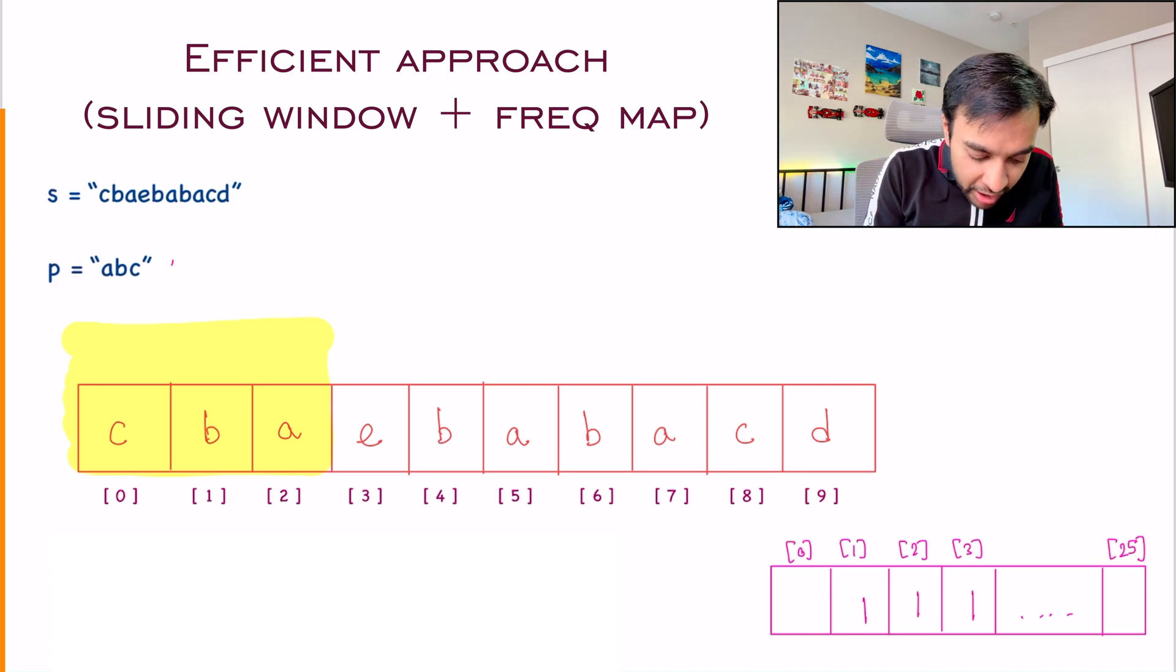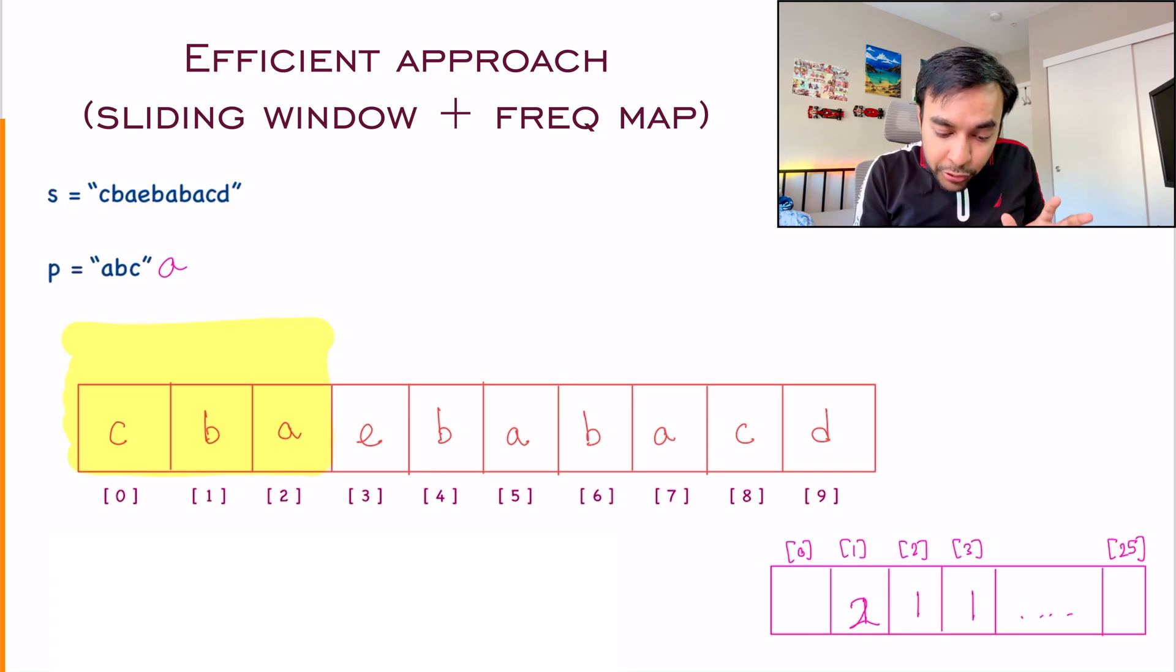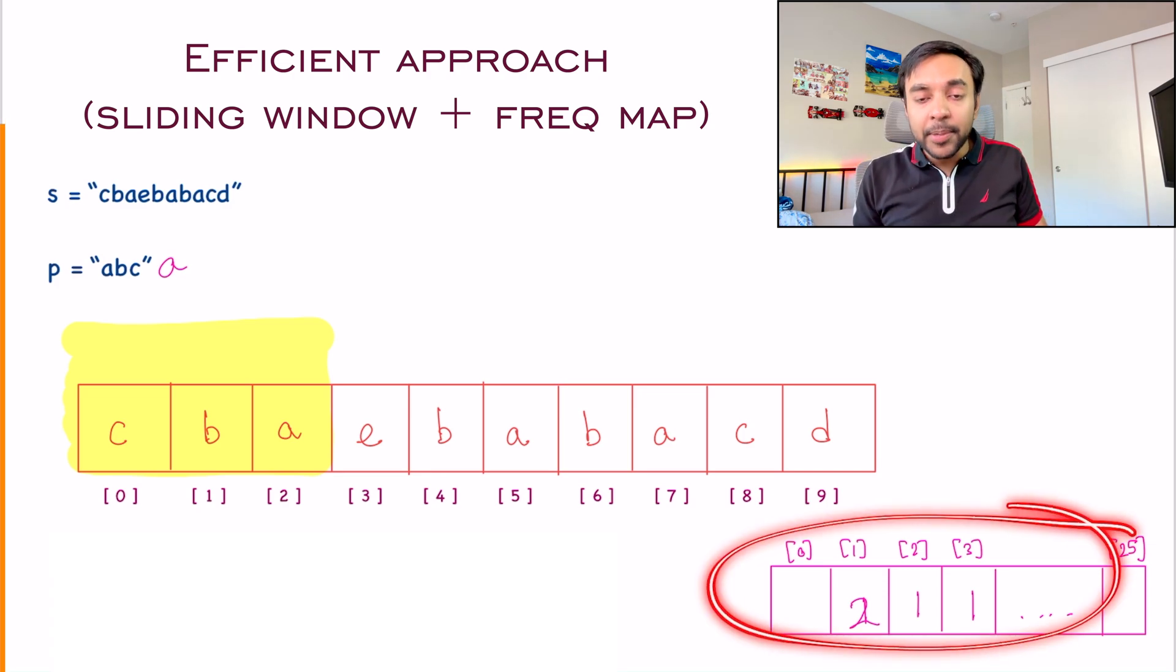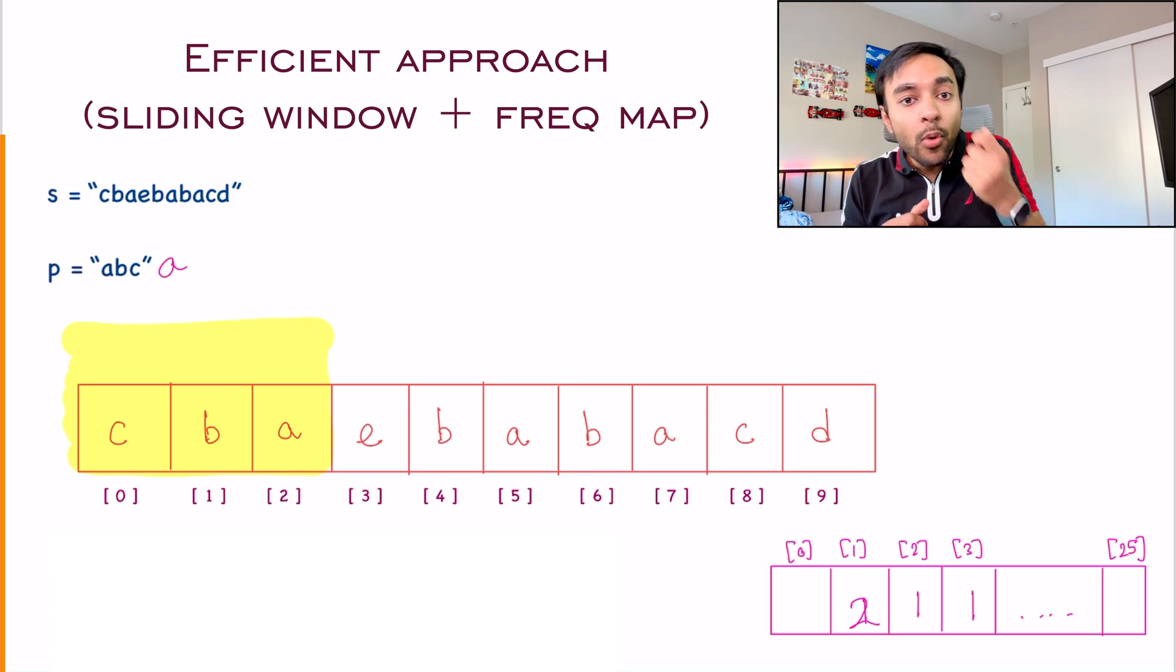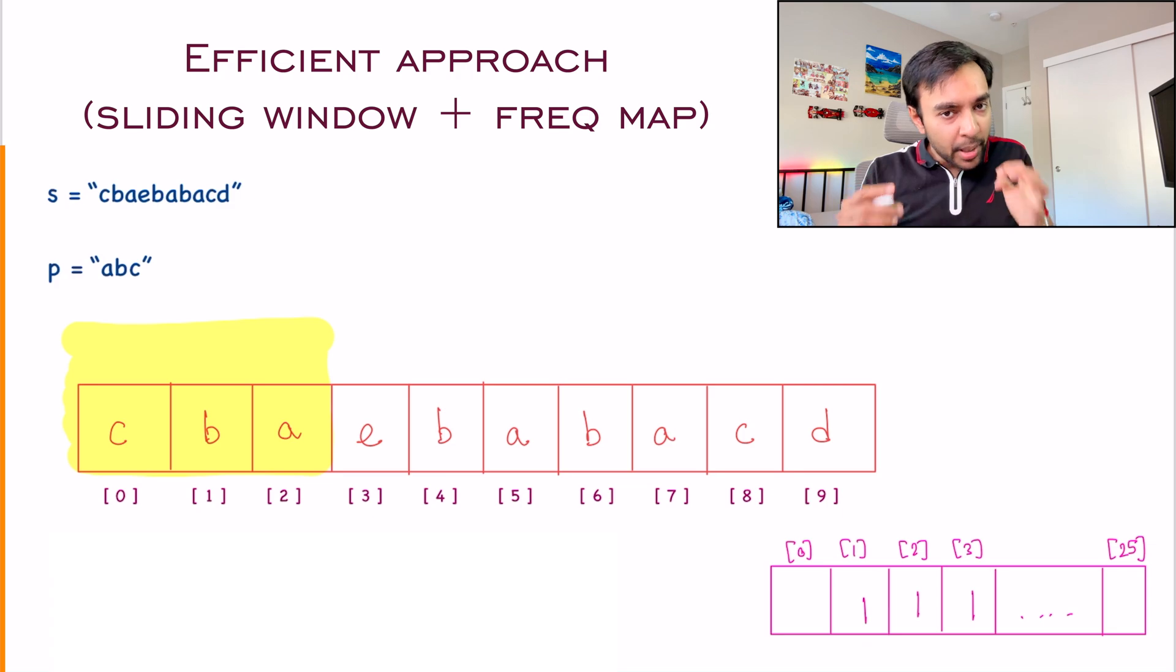So what you can do is you can iterate over your string P once and then populate your frequency array. What will happen over here? You found A once, you found B once and you found C once. If you had one more A over here, then what will happen? This will become two. So this frequency map is kind of storing how many characters and what is the frequency of each of the character.